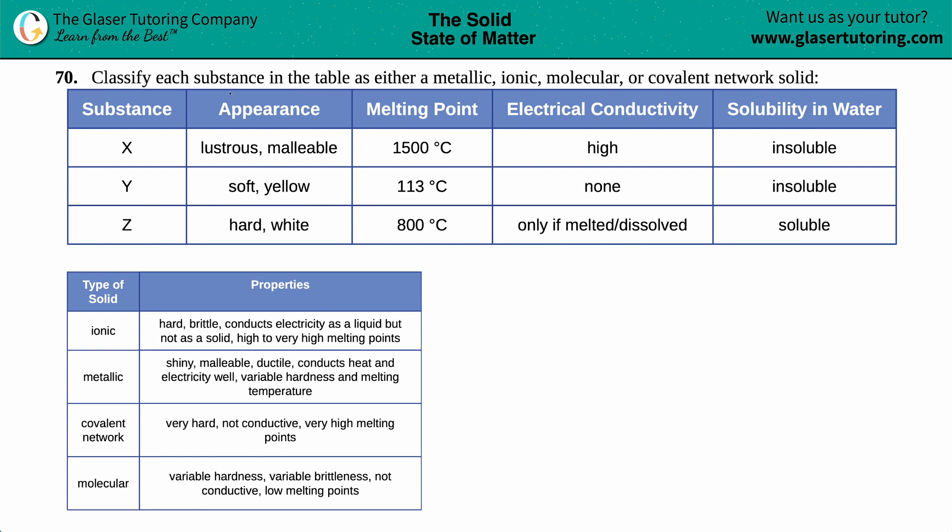Number 70. Classify each substance in the table as either a metallic, ionic, molecular, or covalent network solid. And then we have our three substances here, so X, Y, and Z.